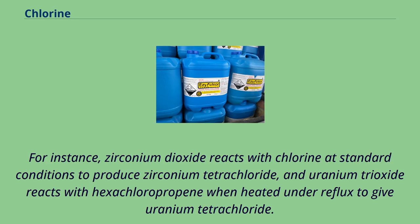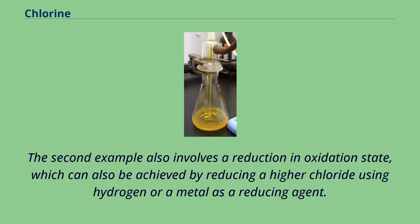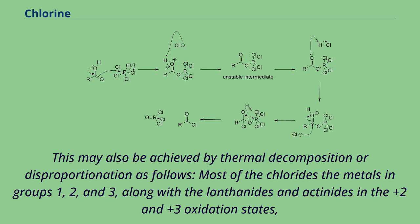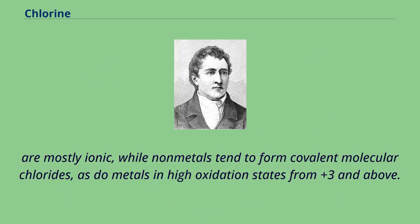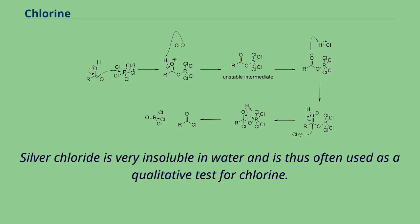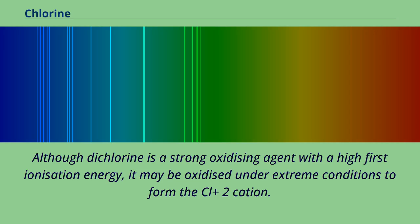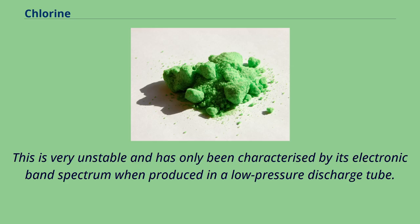Reduction in oxidation state can be achieved by reducing a higher chloride using hydrogen or a metal as a reducing agent, or by thermal decomposition or disproportionation. Most chlorides of metals in groups 1, 2, and 3, along with the lanthanides and actinides in the +2 and +3 oxidation states, are mostly ionic, while non-metals tend to form covalent molecular chlorides, as do metals in high oxidation states from +3 and above. Silver chloride is very insoluble in water and is thus often used as a qualitative test for chlorine. Although dichlorine is a strong oxidizing agent with a high first ionization energy, it may be oxidized under extreme conditions to form the Cl₂⁺ cation.